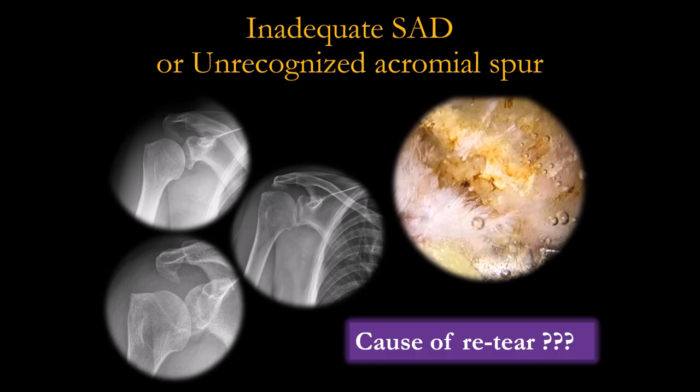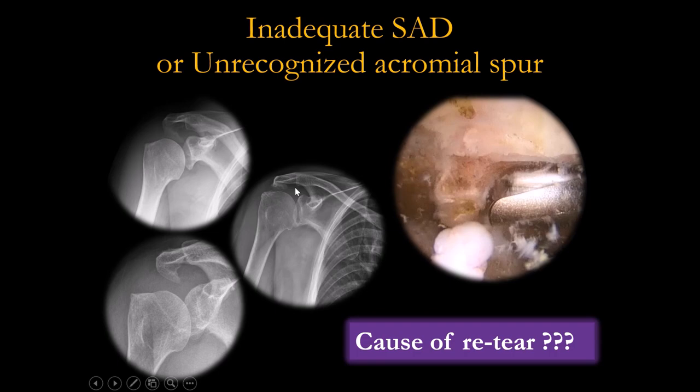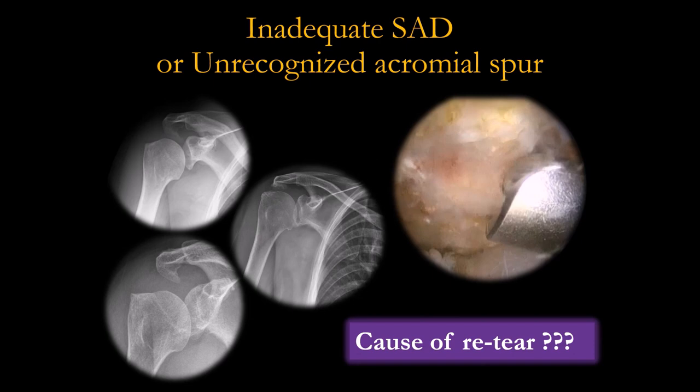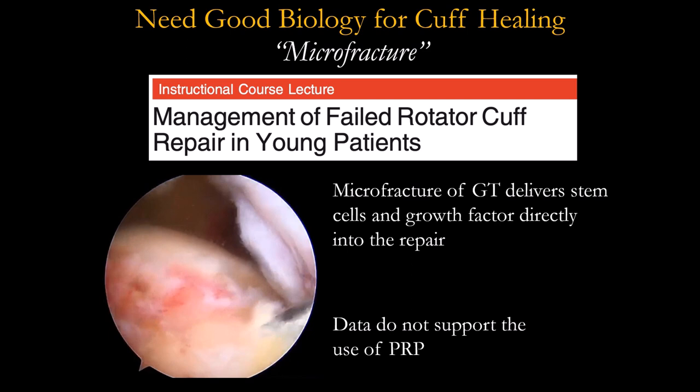Another important factor is inadequate decompression or unrecognized acromion. If you see a hook acromion or an irregular spur, you must decompress — because this will cut your rotator cuff after the repair.